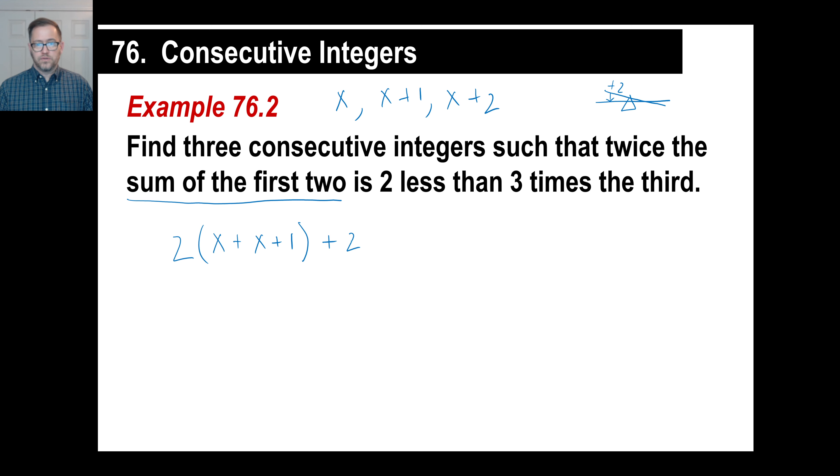So, twice the sum of the first two is 2 less than. 2 less than over here, we add 2 to make it even. 3 times the third. Well, 3 times the third is 3 times the third, right? And there we go. And that's your setup.